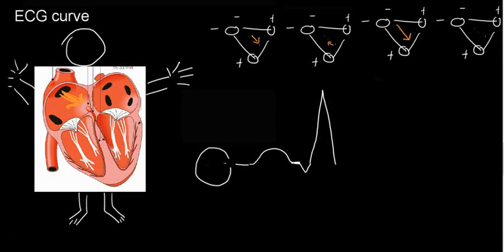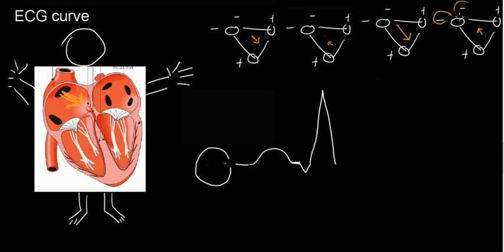Next, we already mentioned that we're going to depolarize the outskirts or edges of the ventricles. Both of them are going to be pointing in that direction, so the integral vector is going to give us a very small negative deflection.